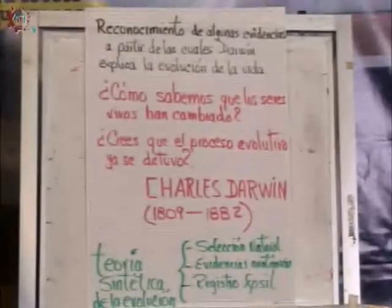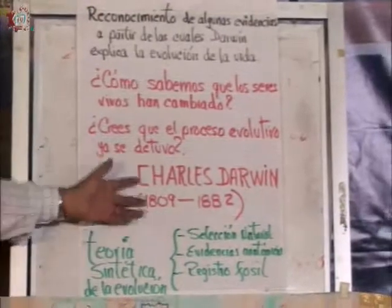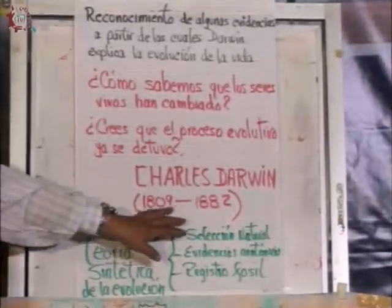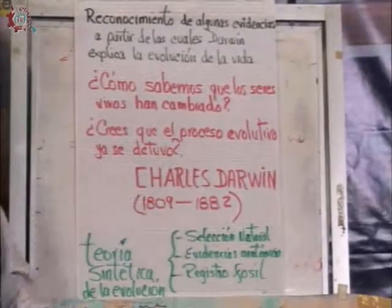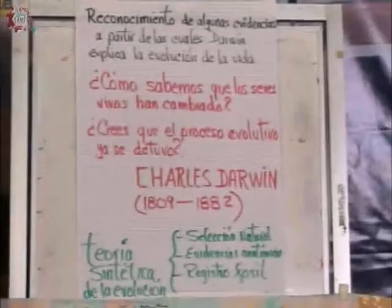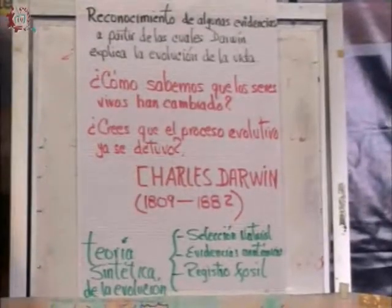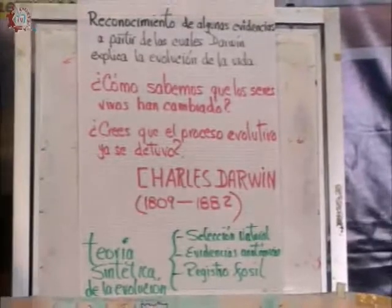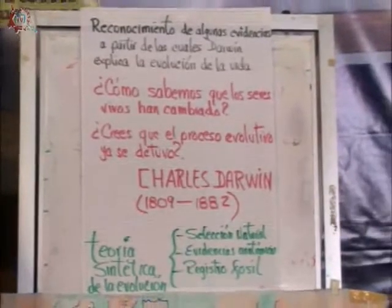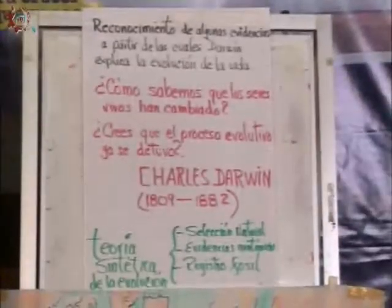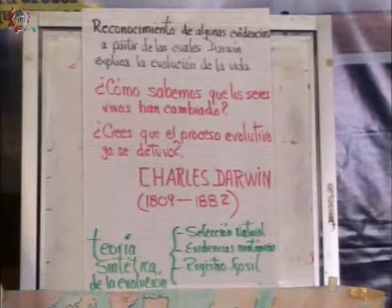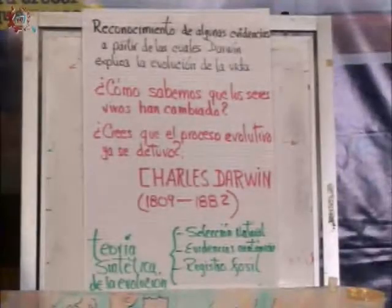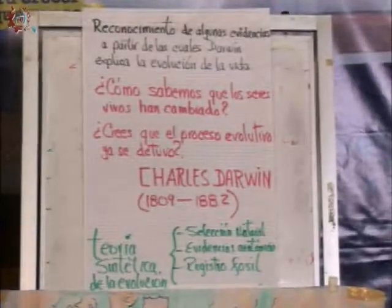Nuestro personaje de hoy se llama Charles Darwin, que nace en 1809 y fallece en 1882. Él publica un libro en 1859 que se llama El origen de las especies, donde marca cómo los diferentes seres vivos han evolucionado a través del tiempo.